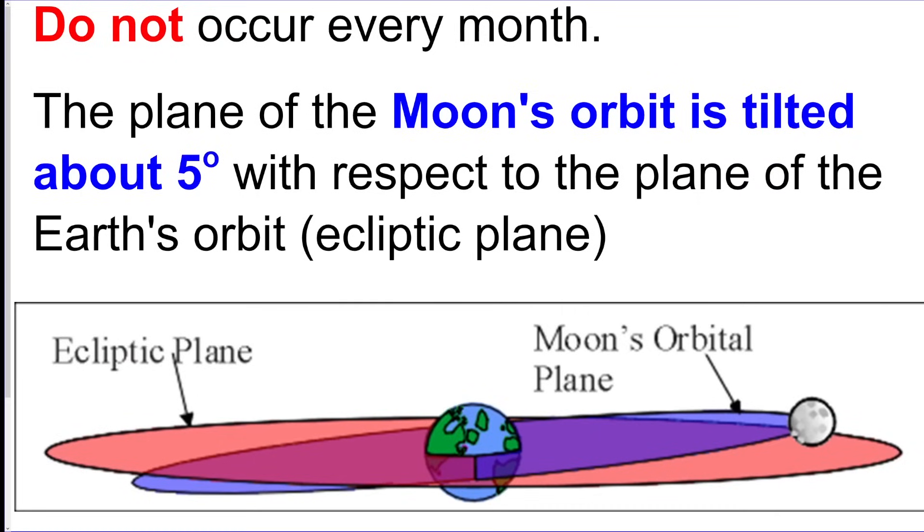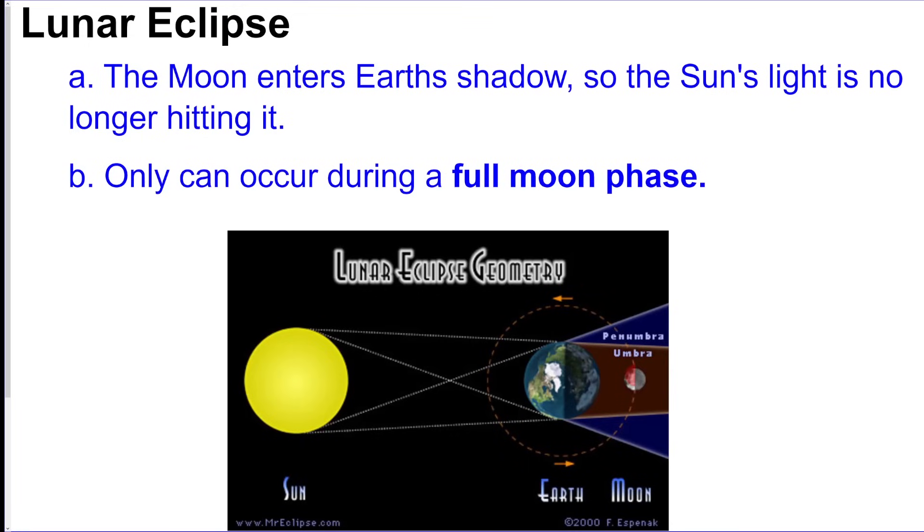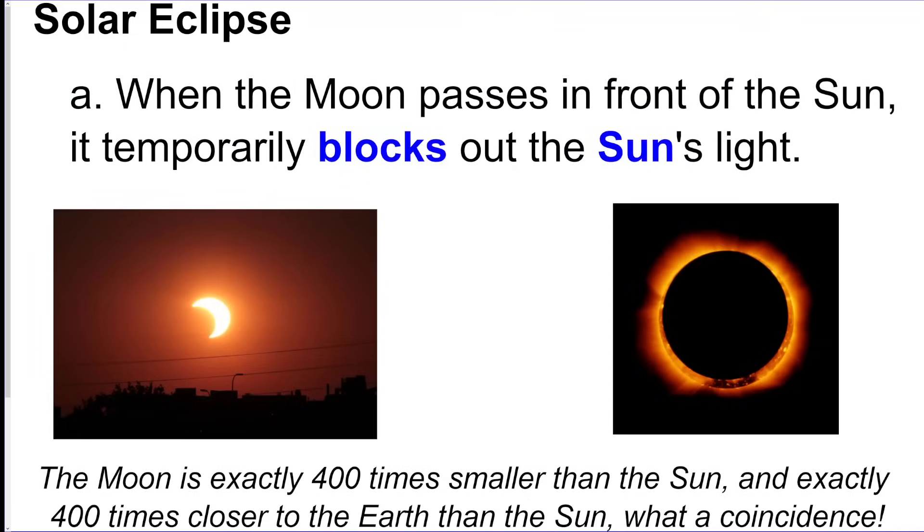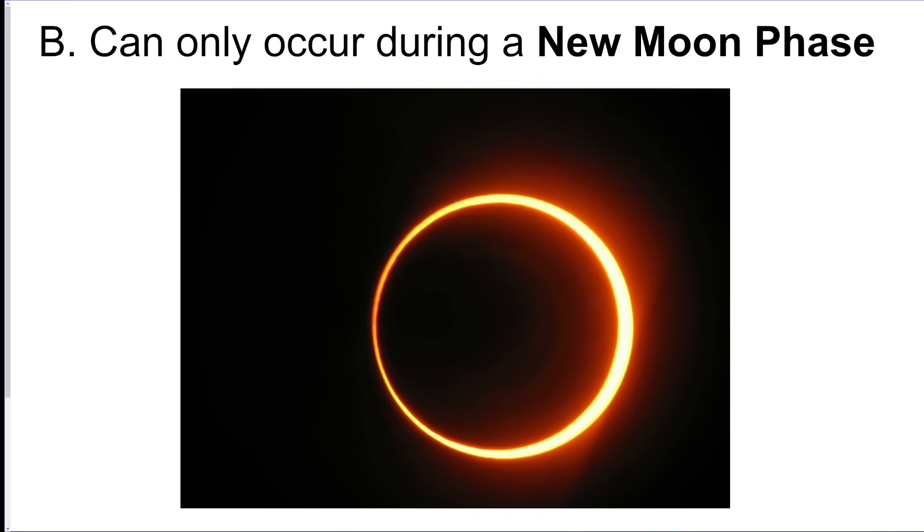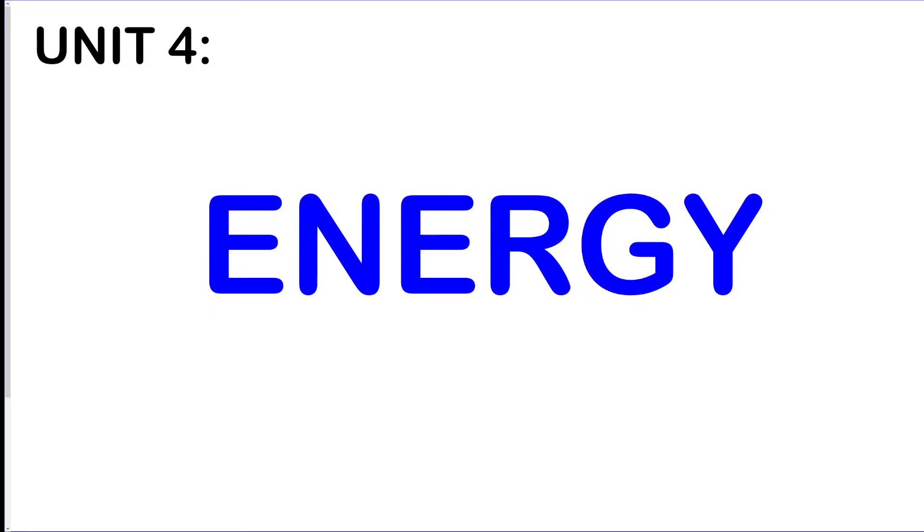We got our eclipses. You should just be aware that the eclipses don't happen every month because the Moon's orbit is slightly tilted, so it does not work every month. You should know the geometry of both eclipses. So what a lunar eclipse is: Sun, Earth, Moon like this. The Moon's in the Earth's shadow. And then you should know solar eclipse is going to be when the Moon blocks out the Sun.